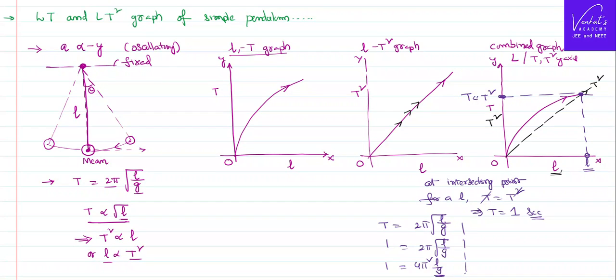You know, g value is 9.8, π is 3.14, its square is also approximately equal to 9.8. So they can be approximately cancelled, then 1 equals 4L, or L equals 1 by 4 meter.